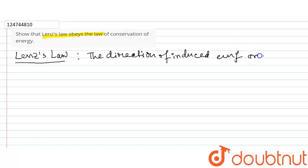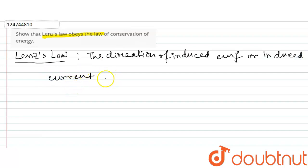The direction of induced EMF or induced current is such that it opposes the change. The direction of induced EMF or induced current is such that it opposes.